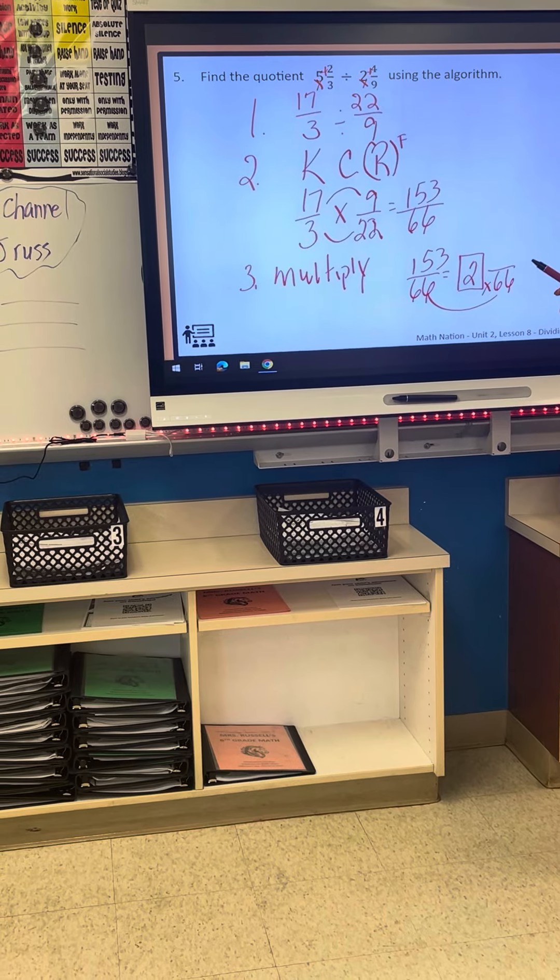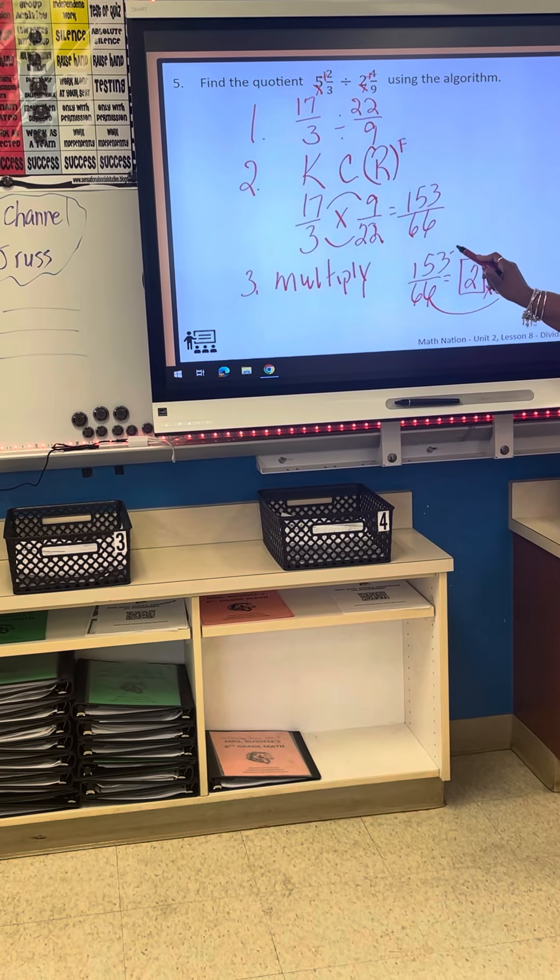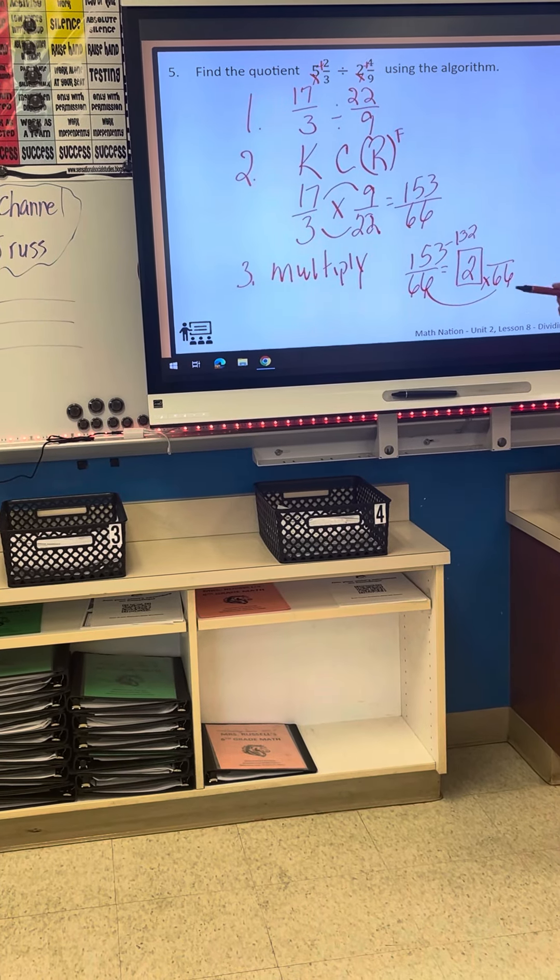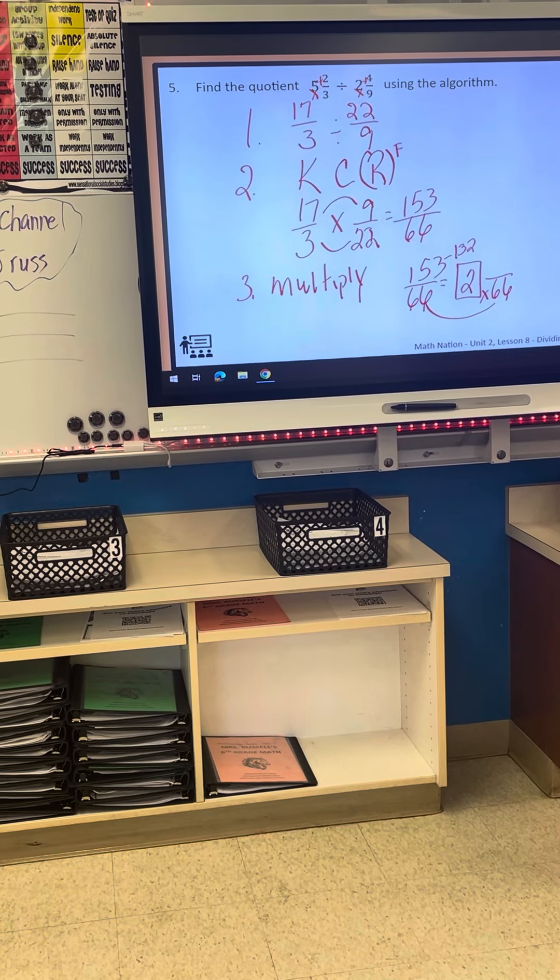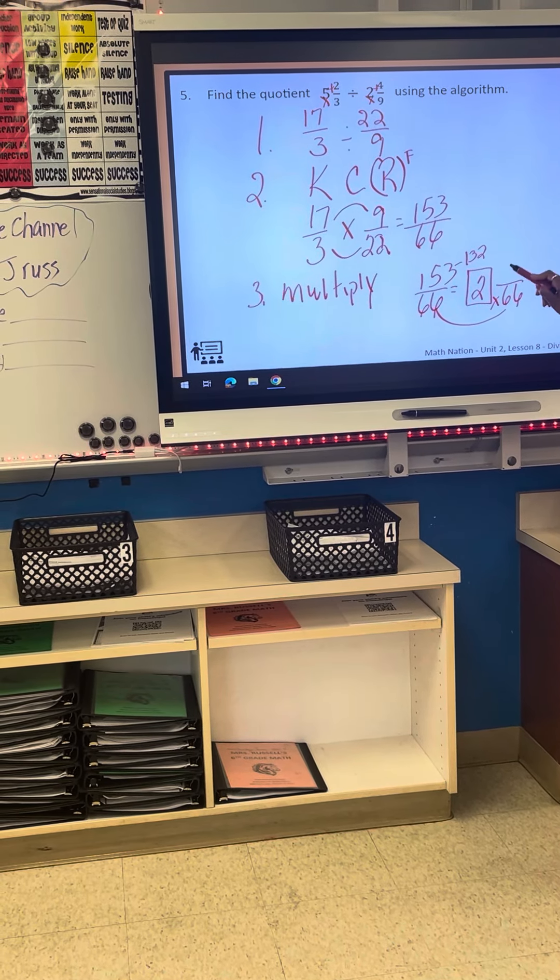Got a calculator. One thirty-two. So I'm going to subtract that. One fifty-three minus one thirty-two is twenty-one.